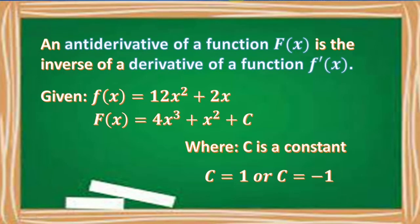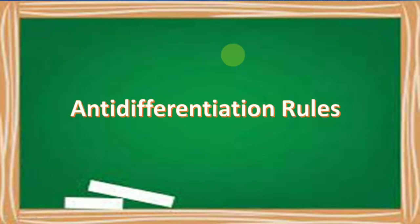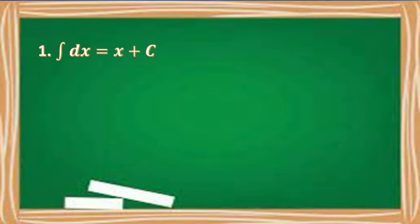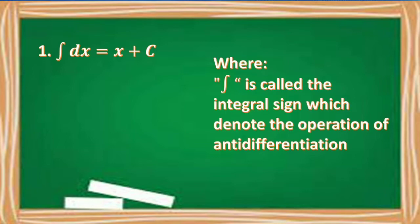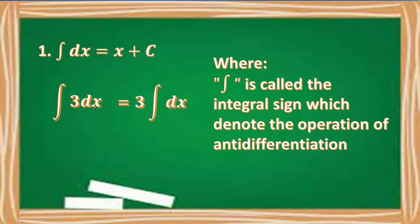Now we have other ways to find the antiderivative of a function using what we call the anti-differentiation rules, also known as the integration rules. The integral of dx is equal to x plus C, where the elongated S is called the integral sign, which denotes the operation of anti-differentiation. For example, the integral of 3 dx is equal to 3 times the integral of dx, which is equal to 3x plus C.